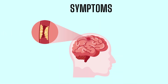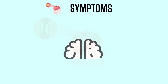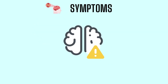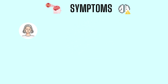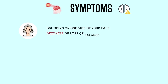Certain symptoms can occur when blood flow to brain cells is blocked. These symptoms often start suddenly and are easy to identify depending on where the blockage is in your brain. Symptoms may include drooping on one side of your face, dizziness or loss of balance.